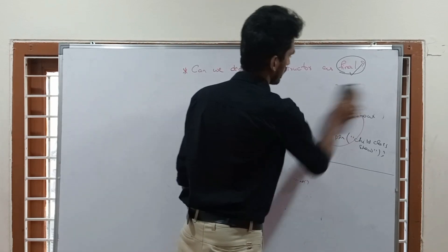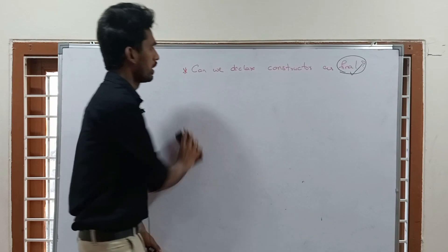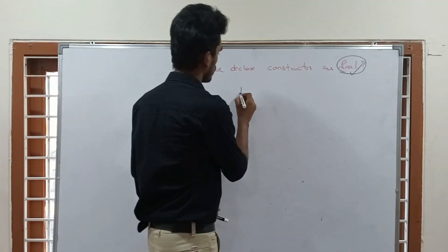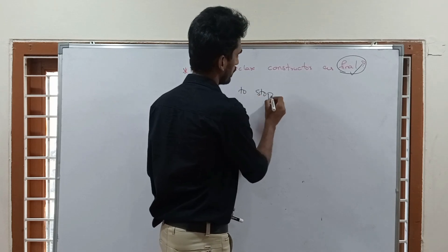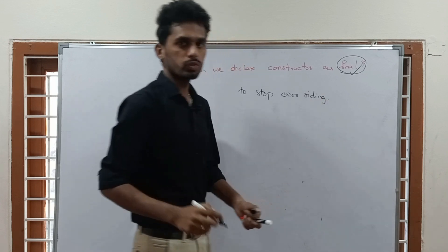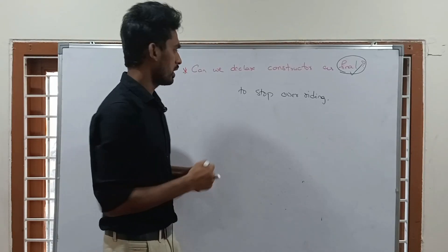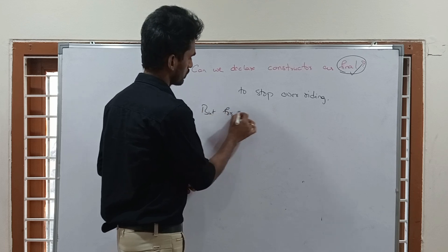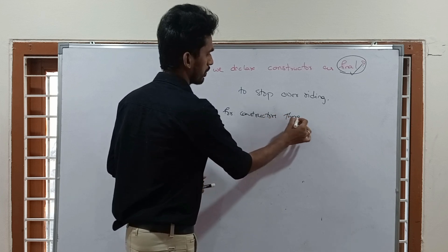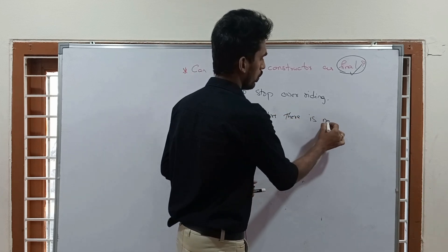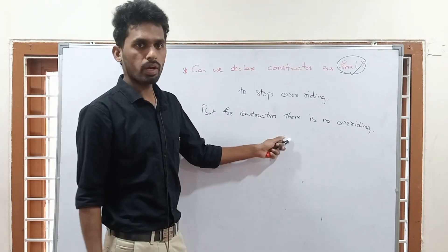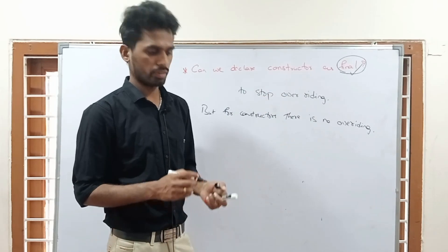Now let's come to the final keyword. The question is: can we declare a constructor as final? Why do we use the final keyword? To stop overriding. But for constructors, there is no overriding. If there is no overriding, then how can you stop overriding?